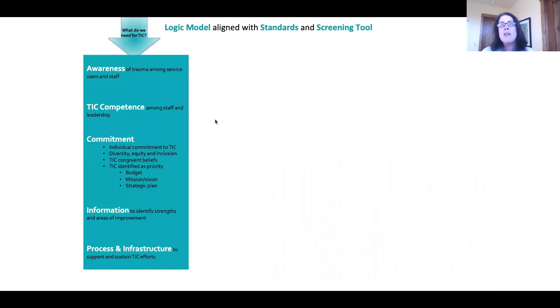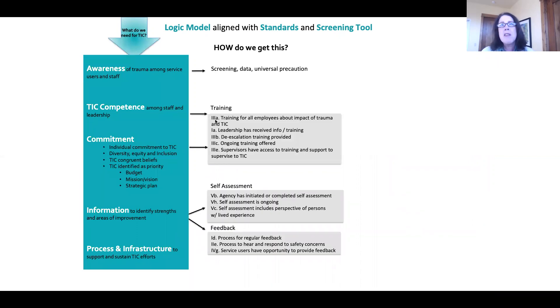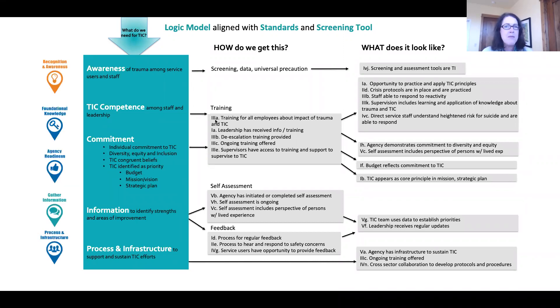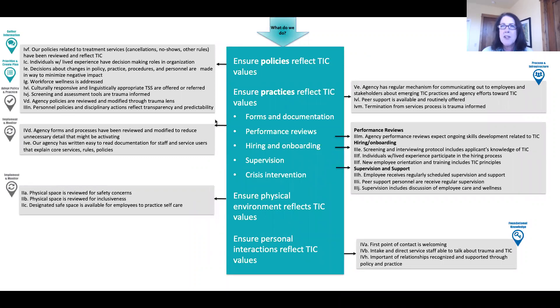Before wrapping up, I want to show you how these tools map onto each other so that you can use them together to inform your implementation efforts. Here is part of the logic model — the what do we need for trauma-informed care. You can see that the elements of the standards are mapped directly to this. The standards answer the how and the what questions. Taking it one step further, you can map on the steps of the screening tool to see where on this instrument these elements would be picked up. The same alignment and coordination can be seen in the next box of the logic model, the what do we do. Many of the actions captured in the standards map onto this piece of the logic model. Additionally, the screening tool phases are picked up here as well — primarily phases three and four, because they represent the trauma-informed changes to policy and practice.